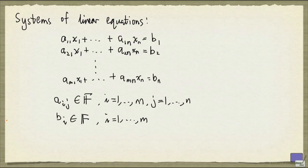Here we have a generic system of linear equations. x1 up to xn are the variables. The aij's and bi's are constants. They are usually taken from some field.